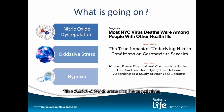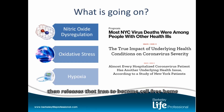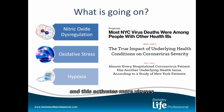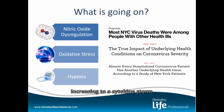SARS-CoV-2 attacks hemoglobin and oxidizes the iron, then releases that iron to become cell-free heme. Cell-free heme is unable to carry oxygen. The hypoxia pathways are stimulated, which activates more virus, as well as stimulating pro-inflammatory cytokines that increase to a cytokine storm.